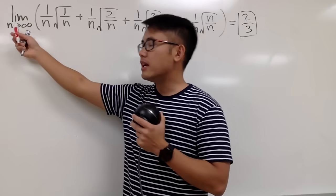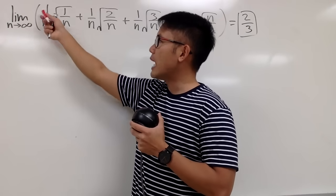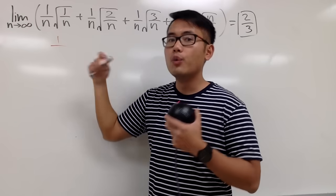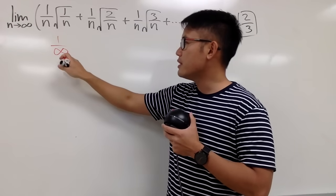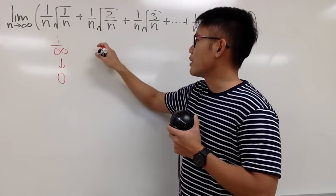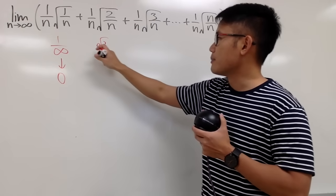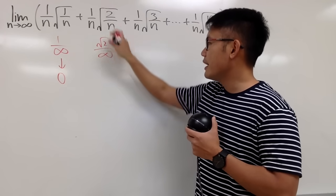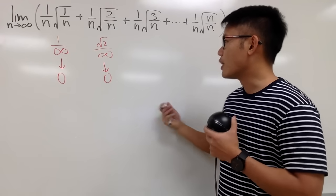So we are taking a limit as n goes to infinity. Let's look at the first part. On the top we have 1, and when we plug infinity on the bottom, we have infinity on the bottom. 1 over infinity goes to 0, and I agree. Next one, you have square root of 2 on the top, which is finite, and you also have infinity on the bottom. Infinity times infinity is still infinity, and this is going to go to 0 as well.